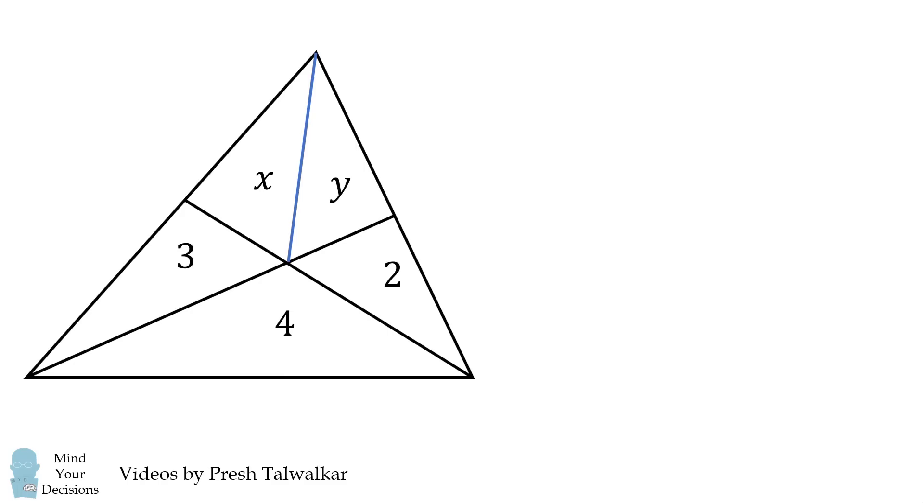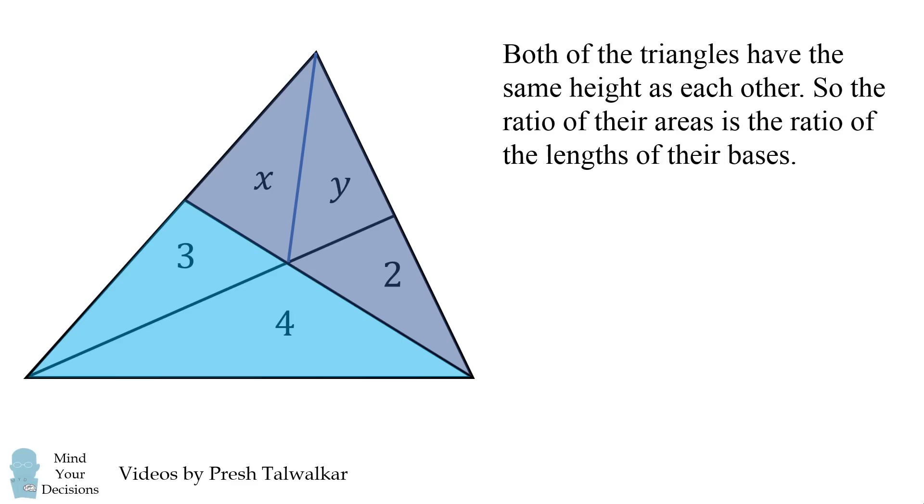We'll use the formula for the area of a triangle and consider some ratios of areas of triangles. For example, consider this blue triangle and this blue triangle. Both of the triangles have the same height as each other. So the ratio of their areas will be the ratio of the lengths of their bases. Let's call their bases b1 and b2. So the area of the top triangle will be x plus y plus 2, the area of the bottom triangle will be 3 plus 4, and the ratio of these areas will be equal to b1 over b2. This simplifies to be x plus y plus 2 all over 7 is equal to b1 over b2.